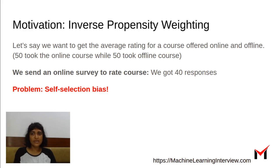So suppose we actually have an online survey to rate the course and we got 40 responses. The first thing you think of here is there's something called self-selection bias. So if you sent an online survey, people who took the course online are probably more accustomed to receiving emails from this company about course content and feedback and so on and they are more likely to take the survey.